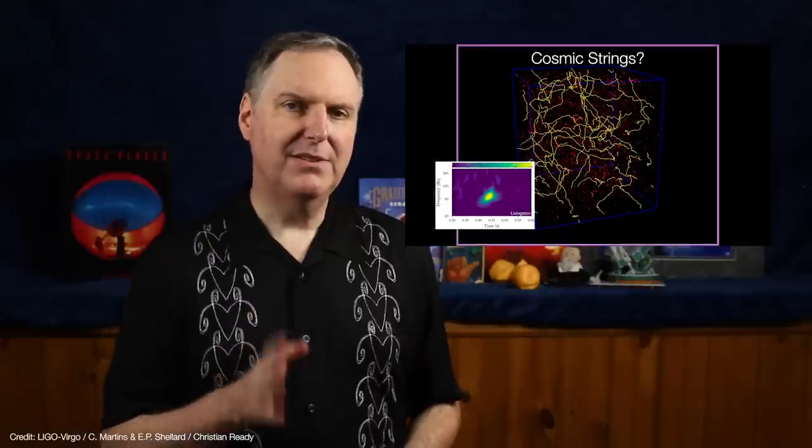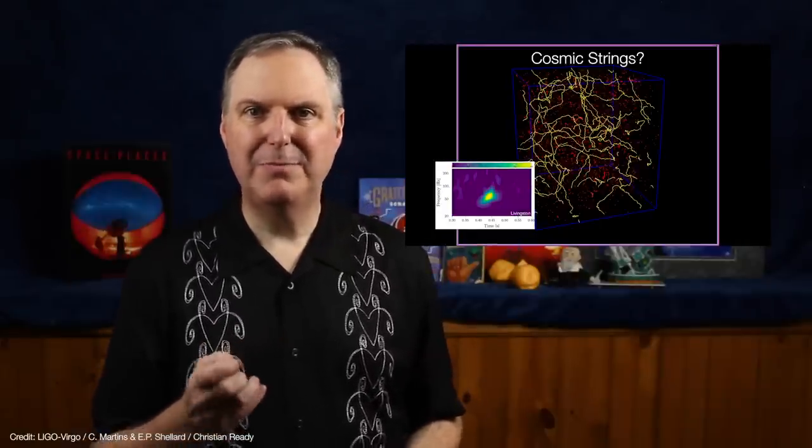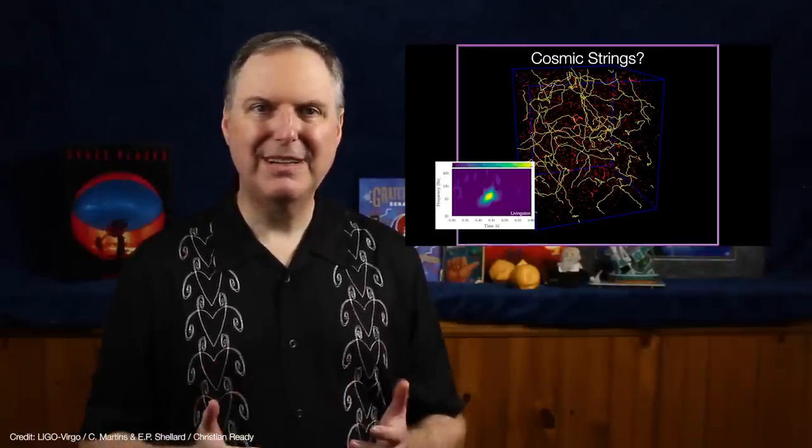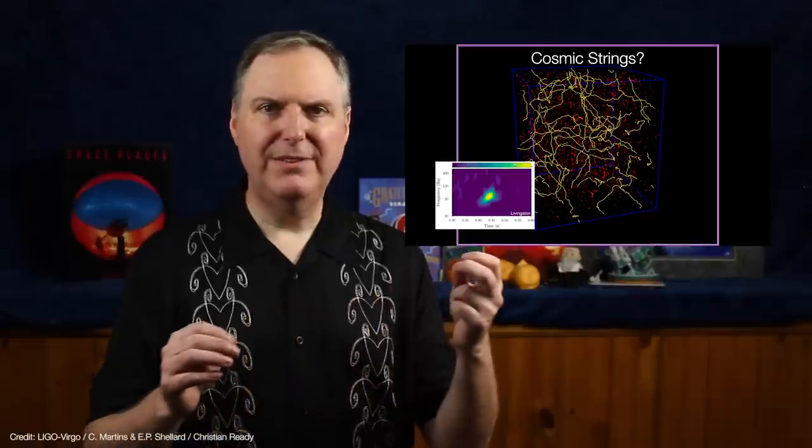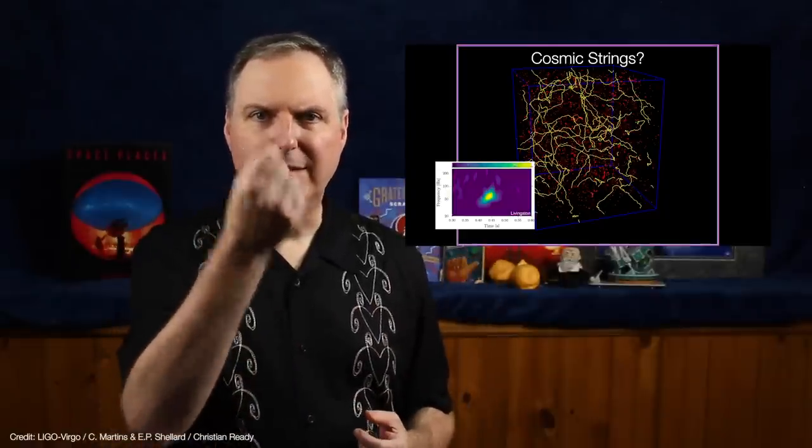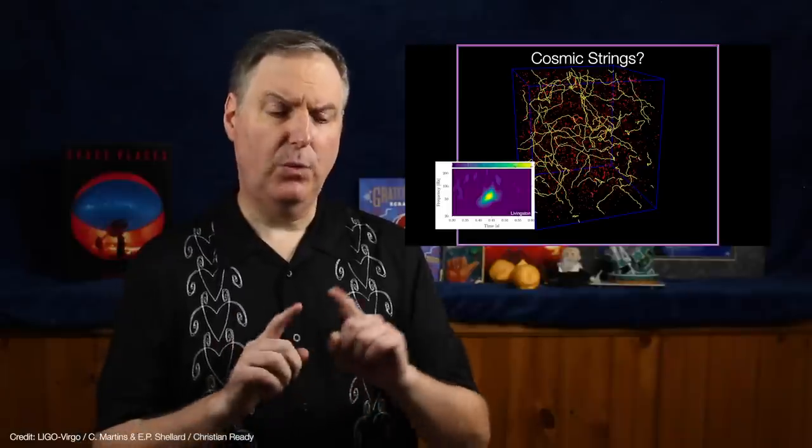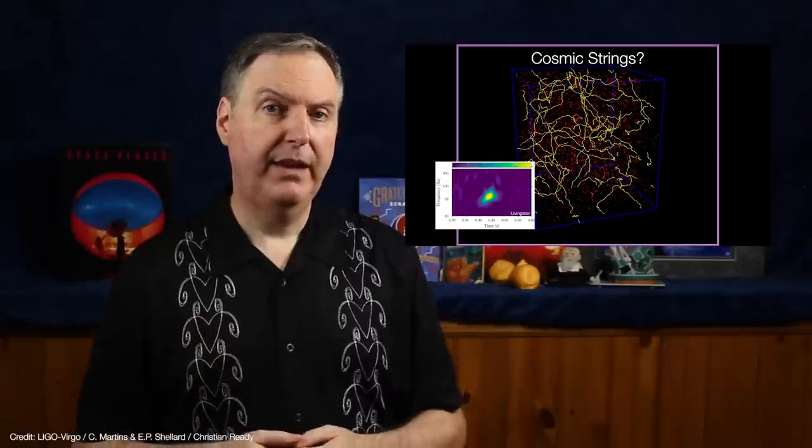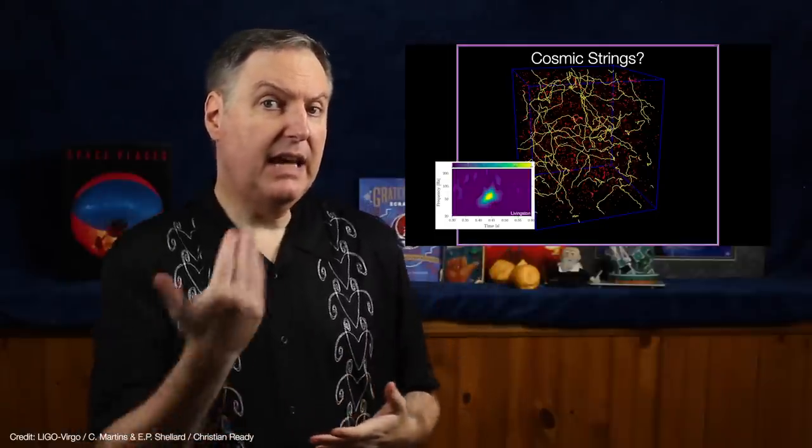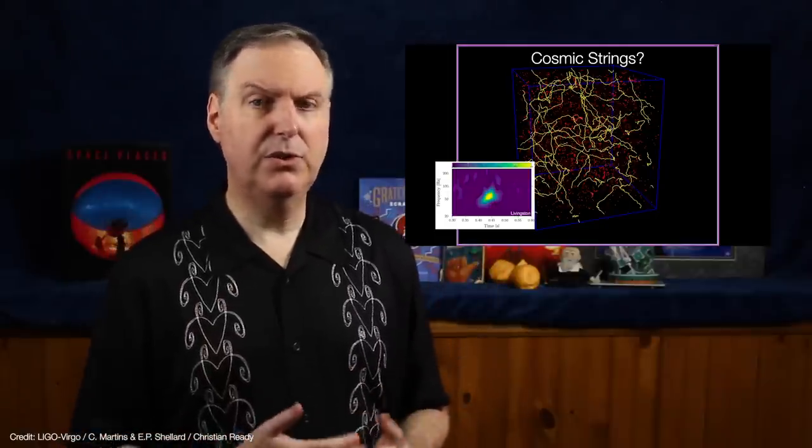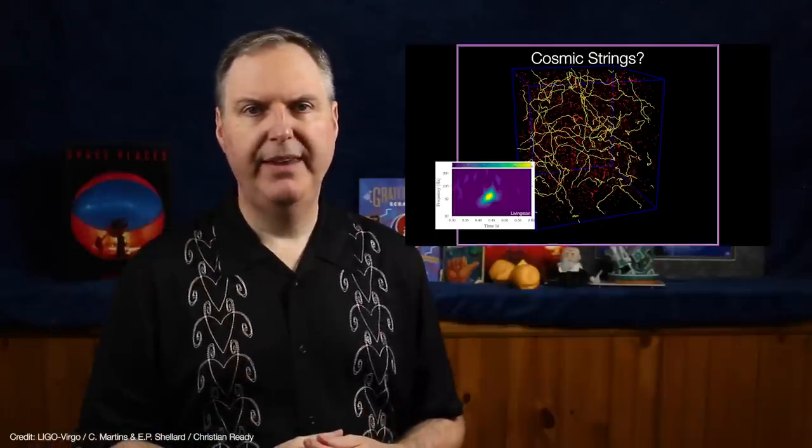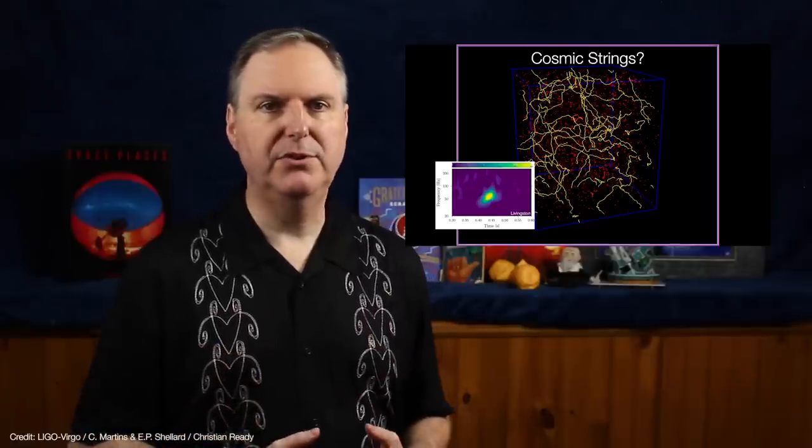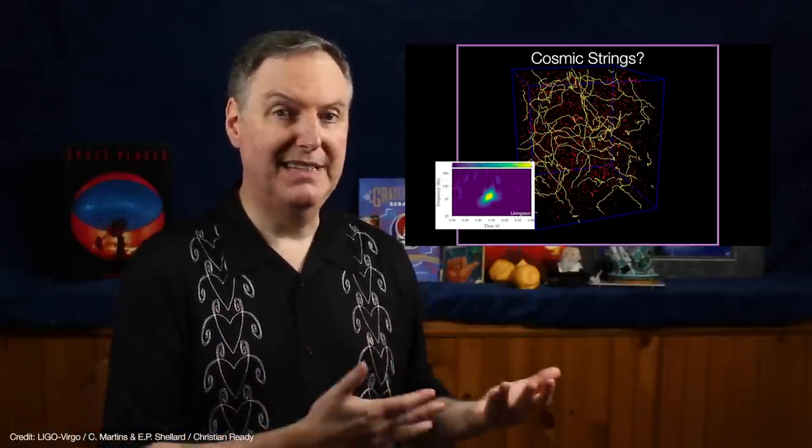The LIGO team even considered the possibility that gravitational waves were caused by kinks in cosmic strings. Cosmic strings are hypothesized to be ultra-dense filaments that are just about the width of a single proton. A string that's one kilometer in length would have the same mass as all of Earth. In theory, a sudden kink in one of these strings could send out a ripple of gravitational waves. The LIGO team analyzed the scenario, but just found it much too improbable to have been the cause of the detected signal.